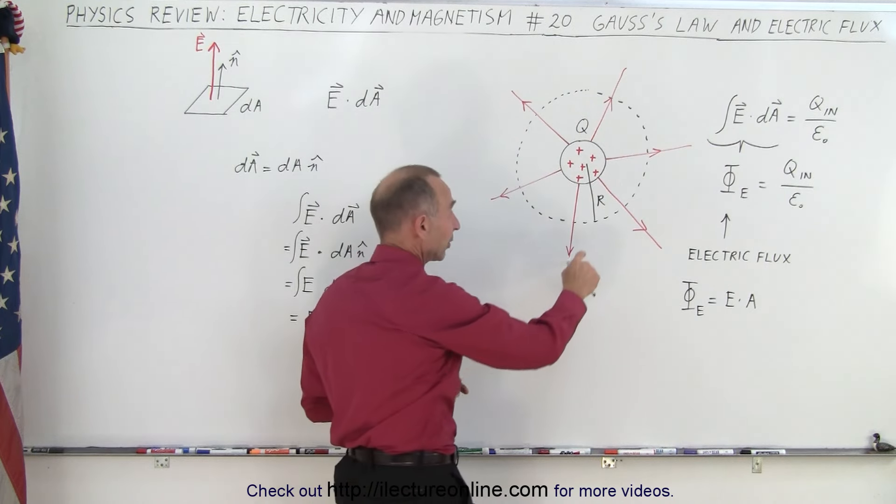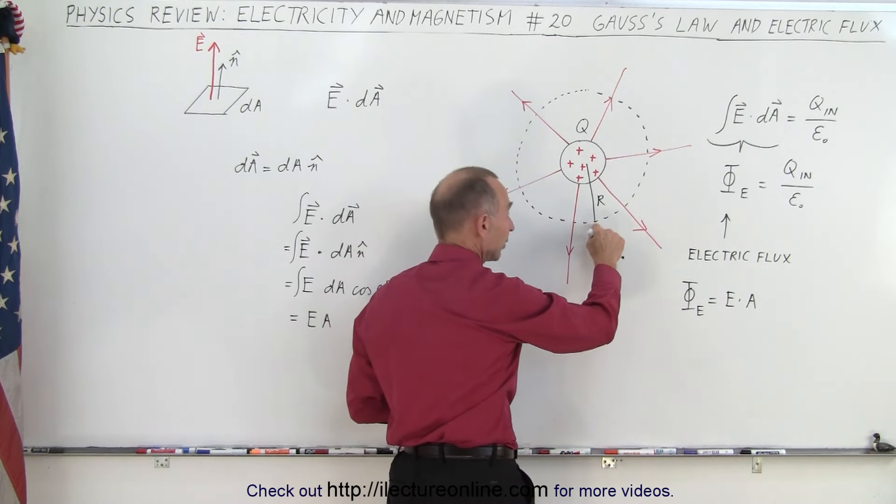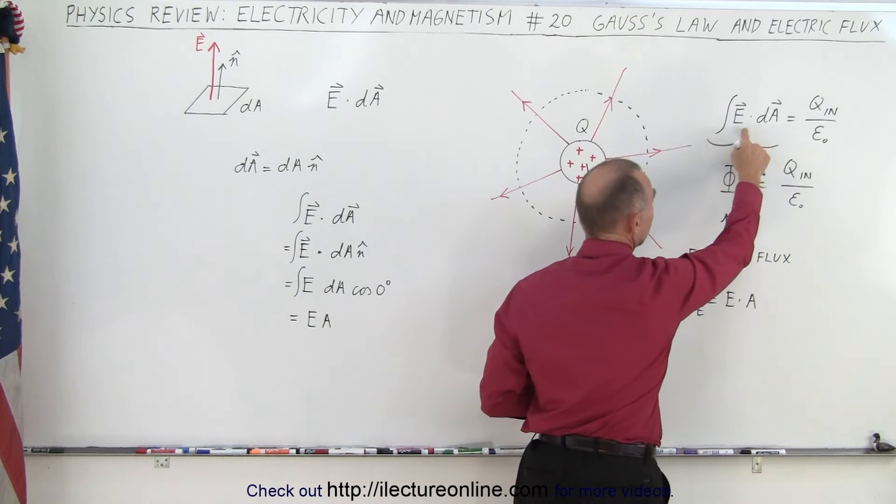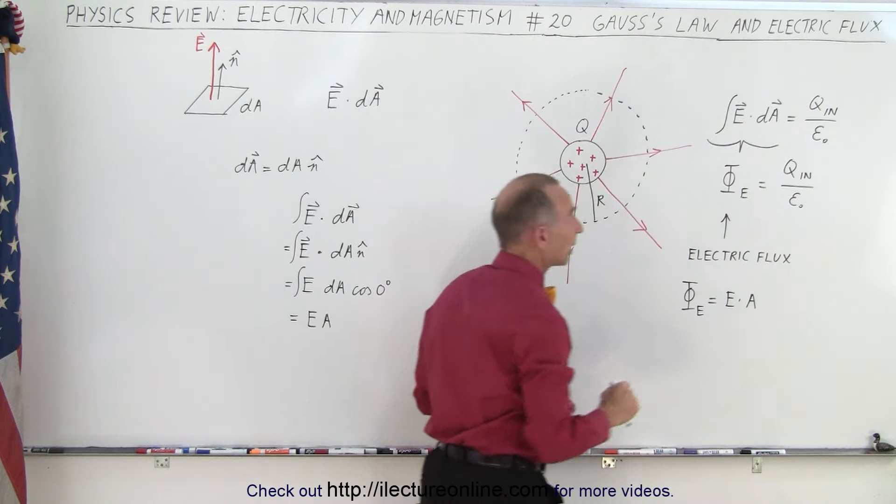So we could find electric field strength on the edge of that Gaussian surface by using our Gauss's law: E dot dA equals Q inside divided by epsilon sub nought.